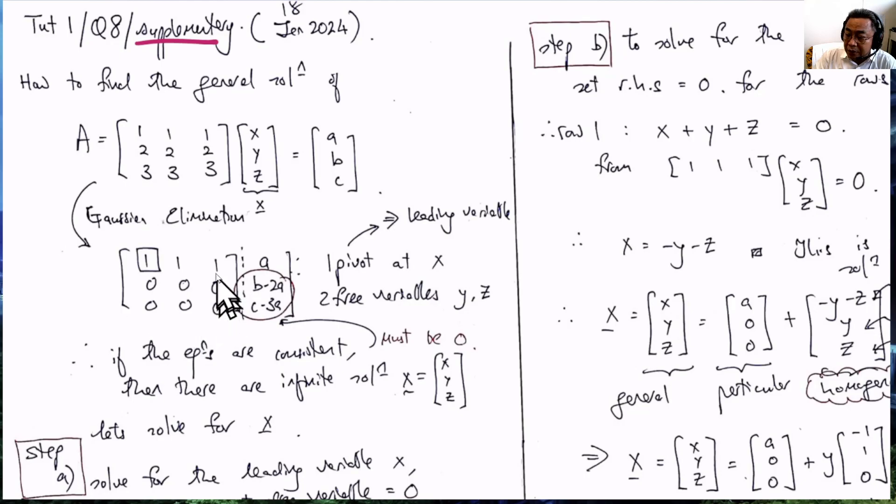When we perform Gaussian elimination to find the solution X of AX equals B, we get this. We have only one pivot because there is only one independent row or column.